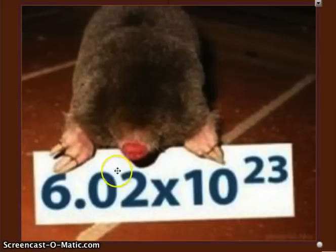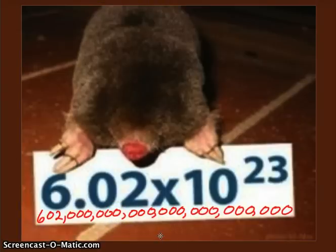We are talking about this mole, which is Avogadro's constant of 6.02 times 10 to the 23rd, which basically looks like this: 602 sextillion. That's 602 with 21 zeros after it. That is a huge value.